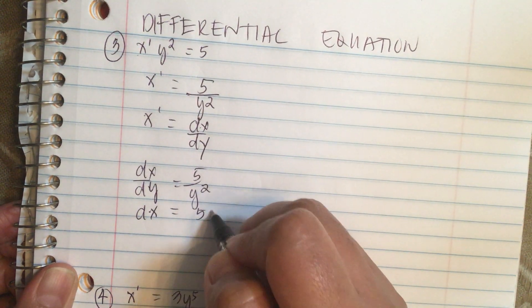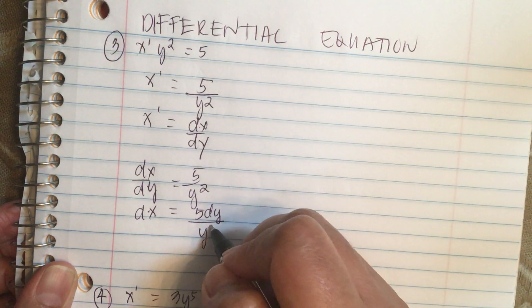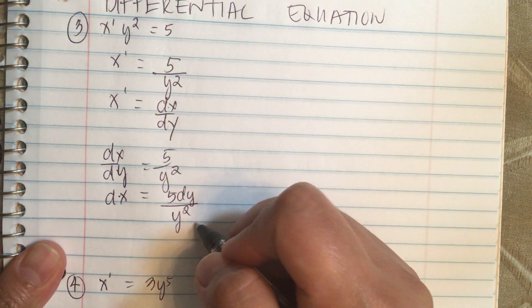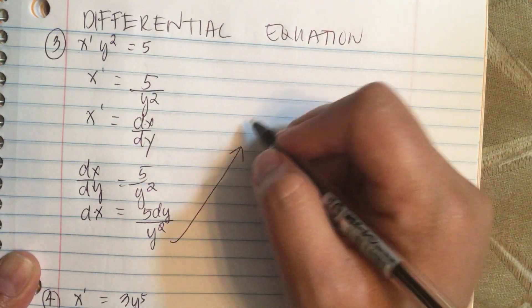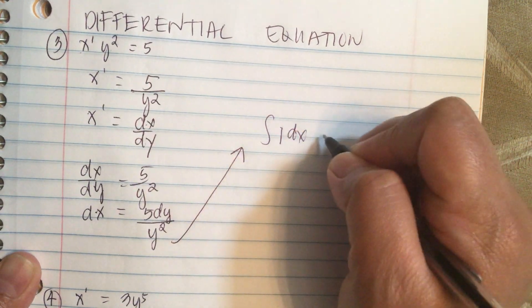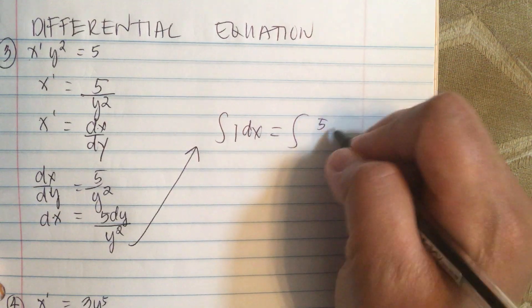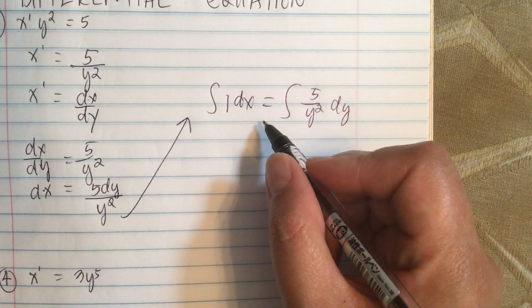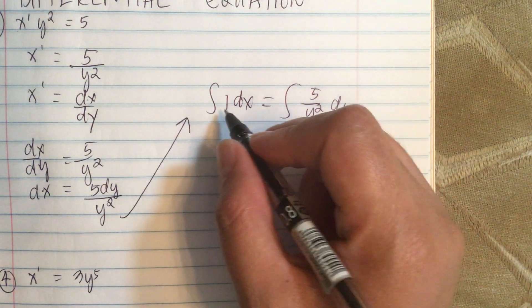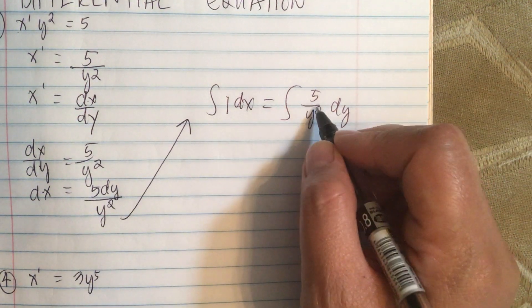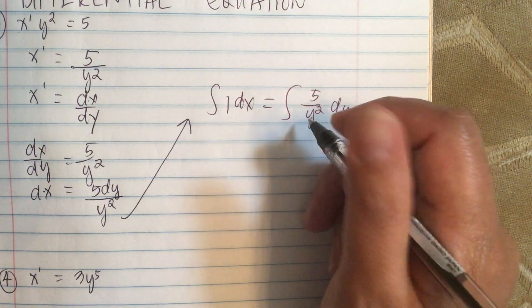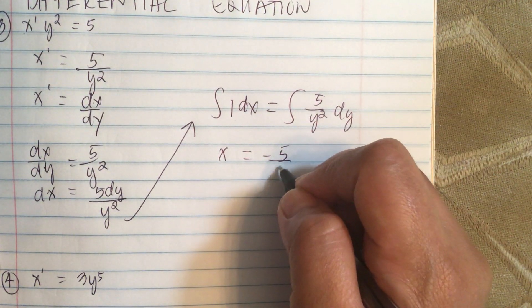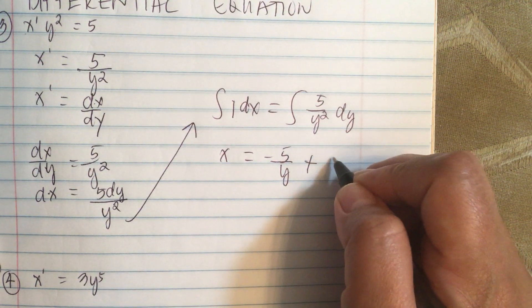We multiply both sides by the differential dy, so we have dx is equal to 5 dy over y squared. Then we separate the variables, so we have the integral of dx is equal to the antiderivative of 5 over y squared dy. The antiderivative of 1 dx is just x, and the antiderivative of 5 over y squared gives us negative 5 over y plus some constant C.